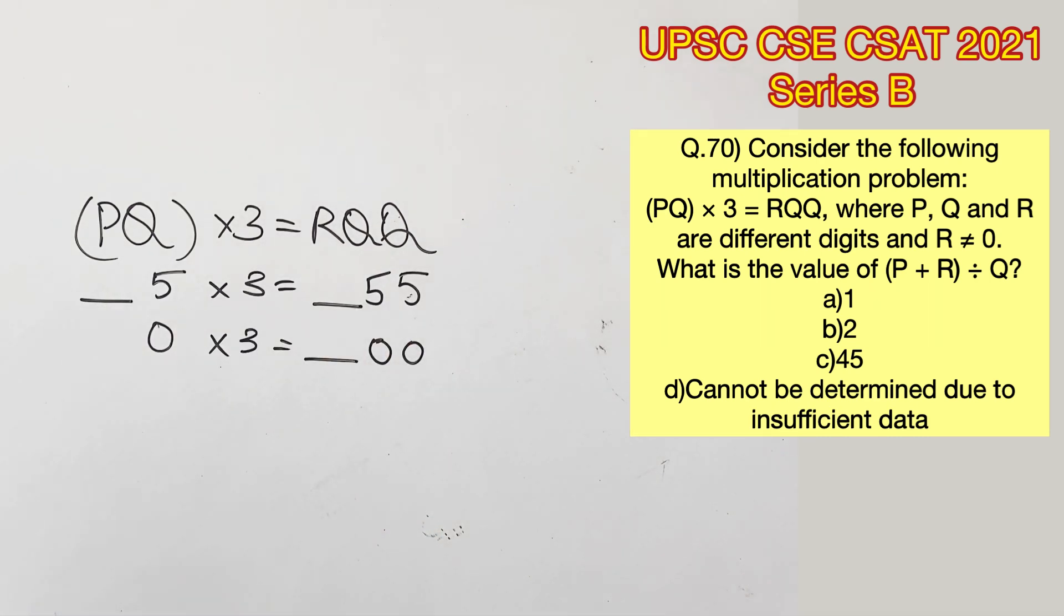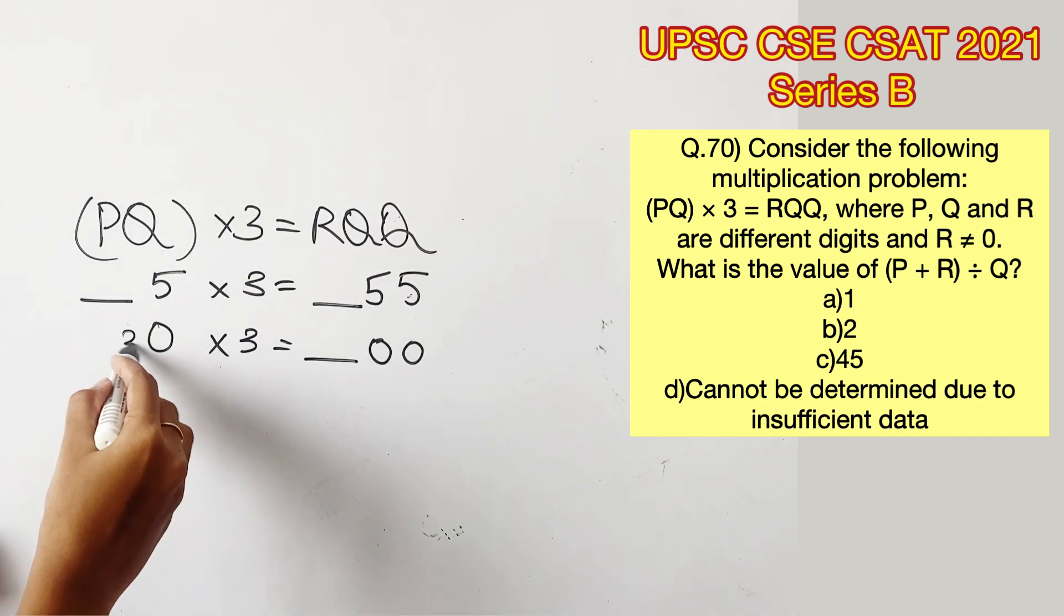These are the only two possibilities that we have. Now we have to find the digit of P and R that satisfies this equation. If you consider 1 in the place of P here you will get 30. 2 will give us 60.